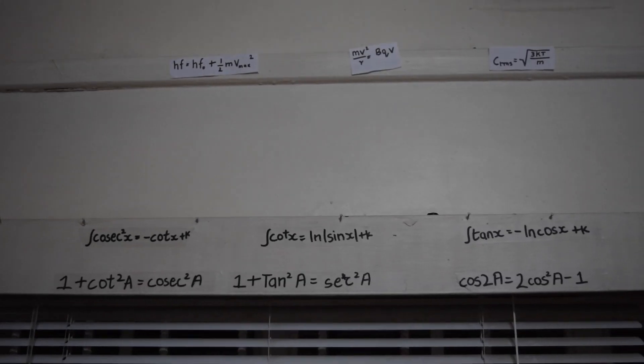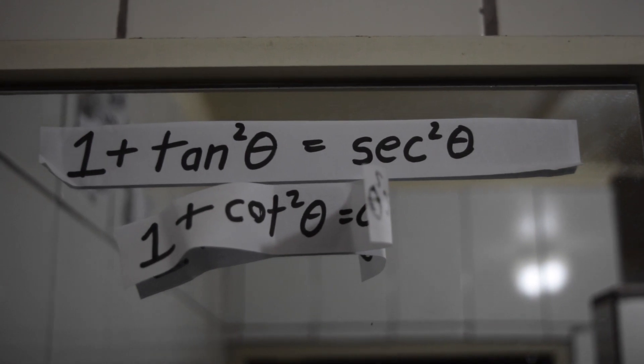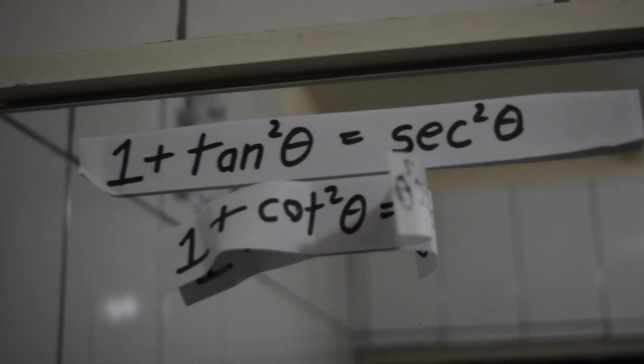Another tip for paper two: remember all the formulas. Do not rely on the formula sheet or constant sheet you're given. Remember all the constants and formulas by heart. Here is my list of formulas — they're in my bathroom, they're on my walls, everywhere. Glancing through them whenever you walk past has made it easy to remember and implement them.